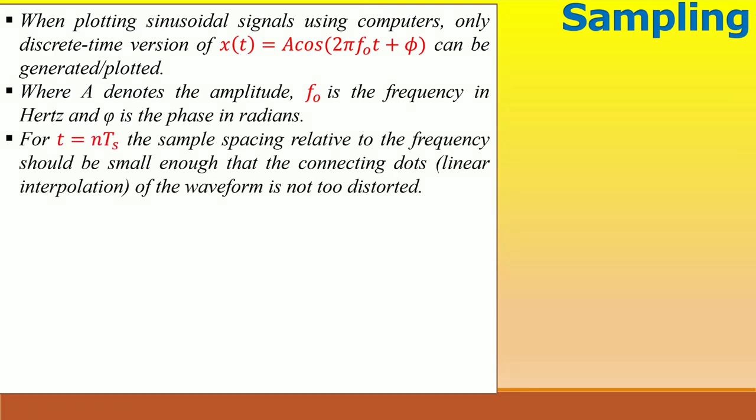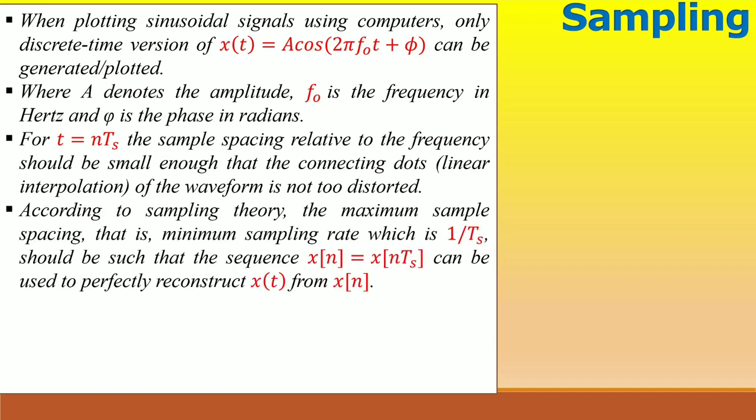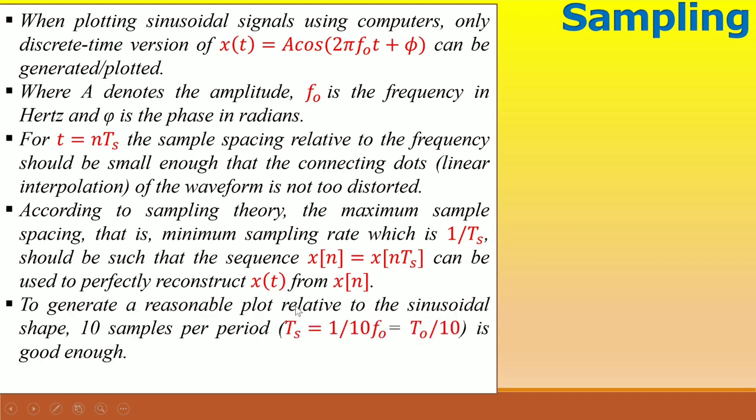For t = nTs, the sample spacing relative to the frequency should be small enough that the connecting dots, that is, linear interpolation of the waveform is not too distorted. According to the sampling theory, the maximum sample spacing, that is, minimum sampling rate which is 1/Ts, should be such that the sequence x[n] = x(nTs) can be used to perfectly reconstruct x(t) from x[n].